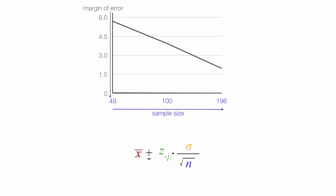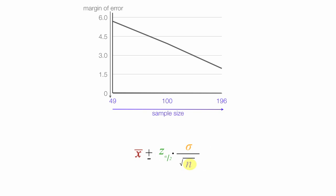I'm going to use different values of n — I'll do it three different times — and I'll recalculate the margin of error. The margin of error is just part of the equation; I'll also recalculate the confidence interval three times.